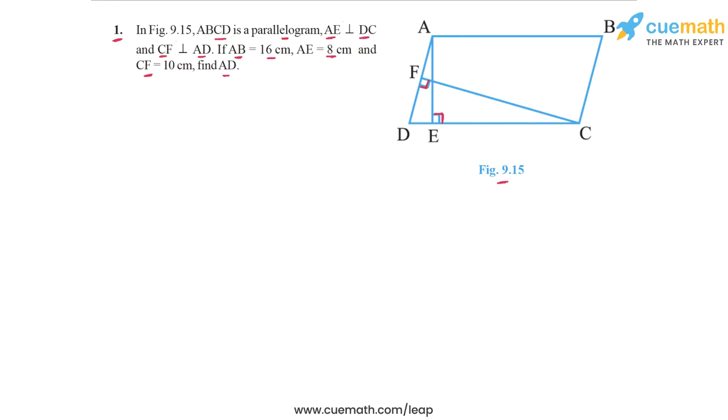Now, the key idea behind solving this problem is that the area of the parallelogram ABCD can be written in two different ways. If you take one of the sides of the parallelogram, let's say AB as the base, and then the corresponding altitude will be AE. So the area of the parallelogram can be written as AB into AE.